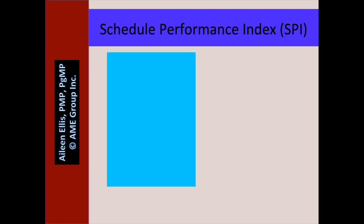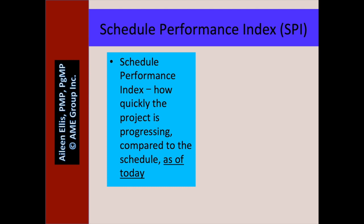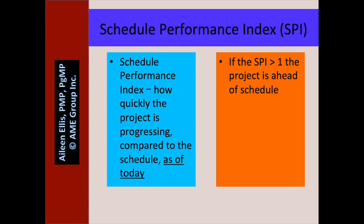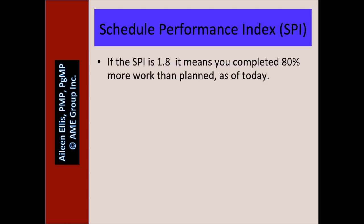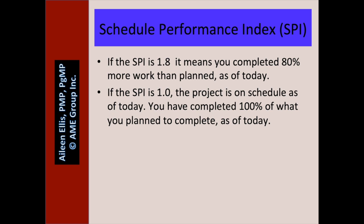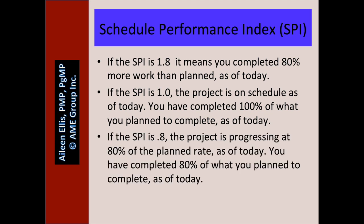Schedule performance index — in my own words — is how quickly the project is progressing compared to the schedule as of today. If the SPI is greater than 1, the project is ahead of schedule. If the SPI equals 1, the project is on schedule. If the SPI is less than 1, the project is behind schedule. For example: if the SPI is 1.8, it means you've completed 80% more work than planned as of today. If the SPI is 0.8, the project is progressing at 80% of the planned rate as of today.